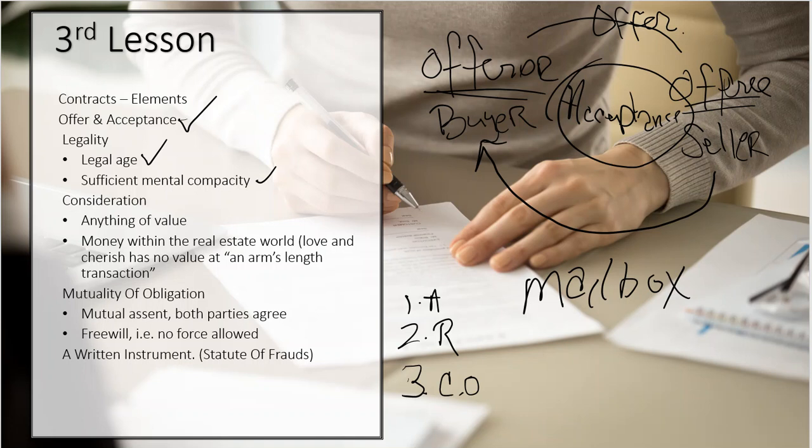Another thing that could happen is the consideration. Consideration is anything of value between the two parties. Now, the key concept here is that we in the real estate world use what's called an arm's length transaction. An arm's length transaction means we do not know the other party, not intimately. If you think about the marriage contract, love, honor, and cherish is the consideration. That is the thing of value that you are receiving from the other person. That honor, that cherish, that love that you are receiving has value to you in the real estate world. I don't know you. So therefore that love, honor, and cherish has no value. I want something else.